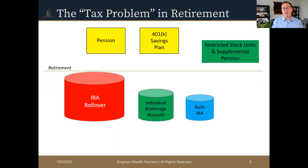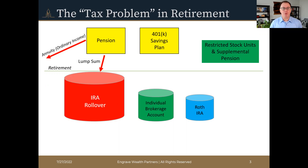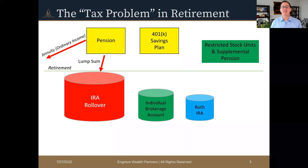A Roth IRA, like a regular IRA, is named in your individual name with the opportunity to designate certain beneficiaries. At the time of retirement, you are going to have some choices to make. The choices begin with a pension. If you have access to a company pension plan, you very likely have options on how to receive that pension. Most companies give you a choice of taking an annuity — a stream of ordinary income received every month, direct deposited to your bank account just like a paycheck — good for the rest of your life or a joint owner's life. Be sure to tune into our next video where we'll dive into the details of taking an annuity or a lump sum payment.